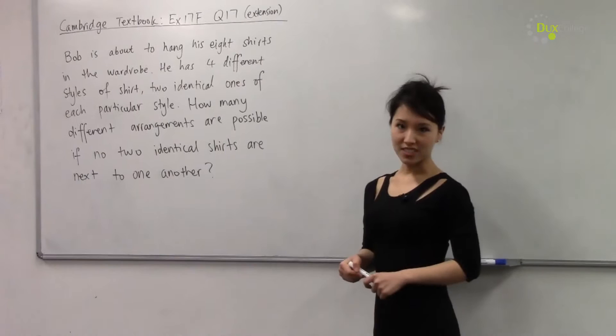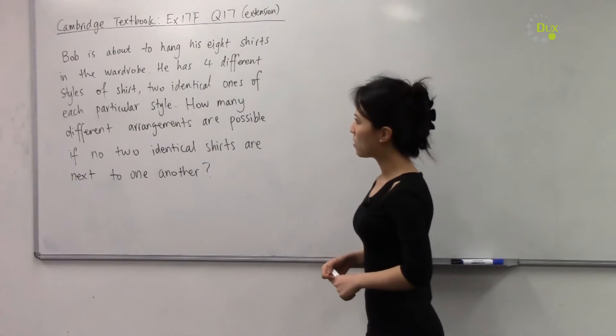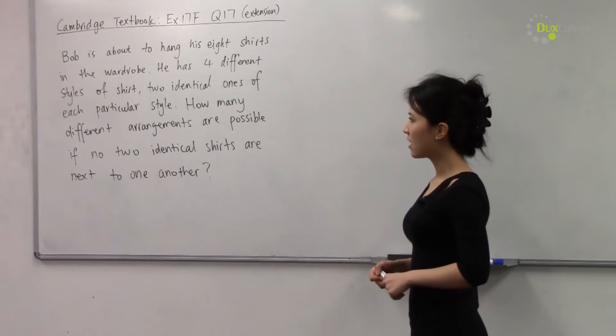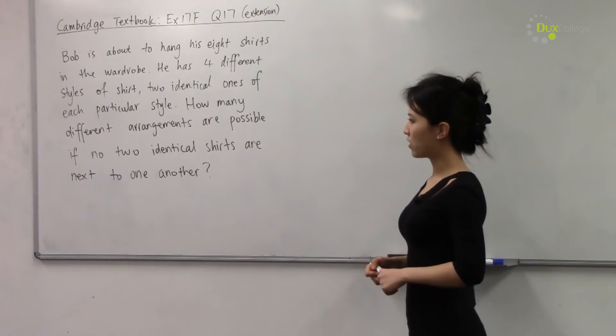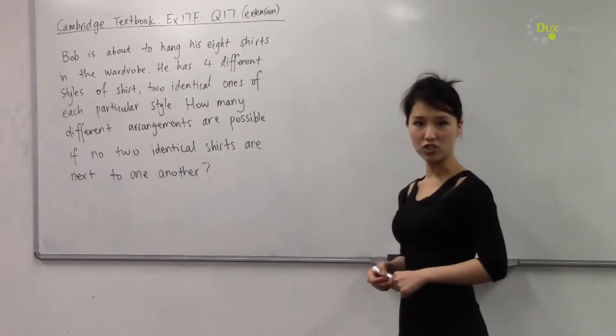This is question 17 in the extension section of exercise 17F. It says Bob is about to hang his eight shirts in the wardrobe. He has four different styles of shirts, two identical ones of each particular style. How many different arrangements are possible if no two identical shirts are next to each other?